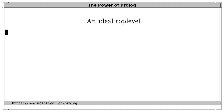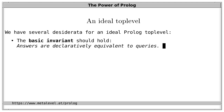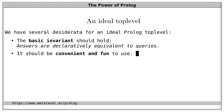Now let's think about what we expect from an ideal Prolog top level. We have several desiderata. Most importantly, the basic invariant should hold: answers are declaratively equivalent to queries. This is a feature seen in the sample interaction that allows easy testing of answers and reasoning about them. Further, the top level should be convenient and fun to use — providing shortcuts like completion and history. At the same time it should stay simple and shouldn't provide too many features; rather, just the right features to make it fun to use.